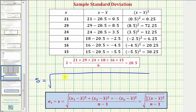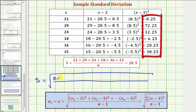We'll have a fraction under the square root where the numerator is going to be the sum of the squares of the deviations. So we'd have 0.25 plus 72.25 plus 12.25 plus 6.25 plus 20.25, and then finally plus 30.25.